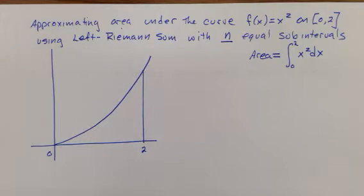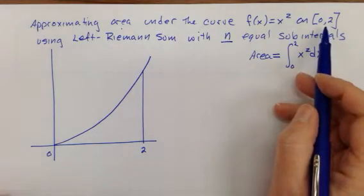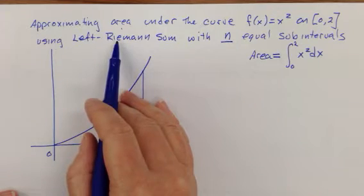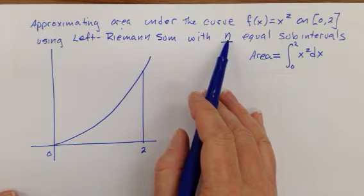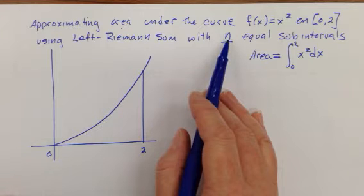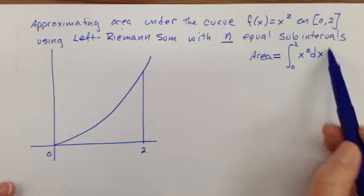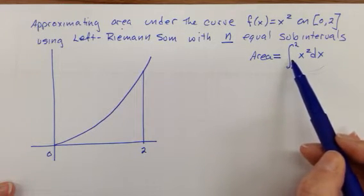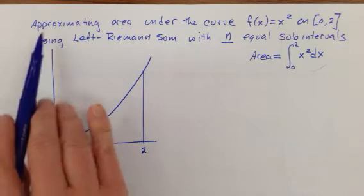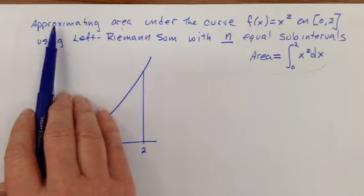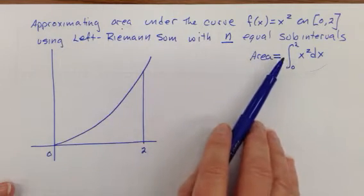Okay, corn children, we are going to be approximating the area under the curve f of x equals x squared on the interval from 0 to 2 using left Riemann sums with, here's the kicker, n, not 5, not 7, but n equals subdivisions where n could be any whole number we want it to be. We of course remember the integration symbol is the actual area. We will not be finding this directly at first. We will be approximating at first, but then at the very end we will turn this into the actual area.